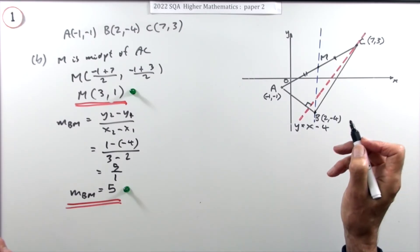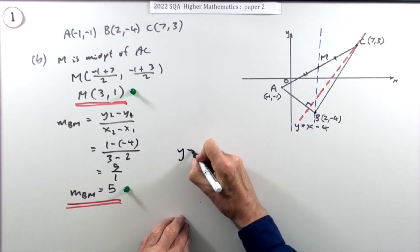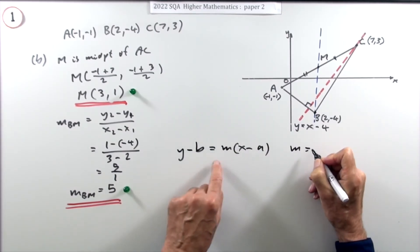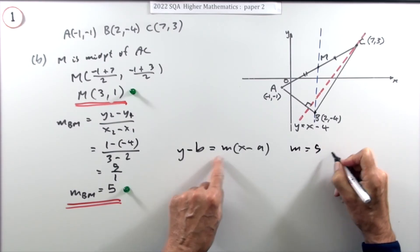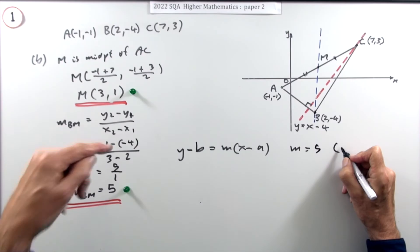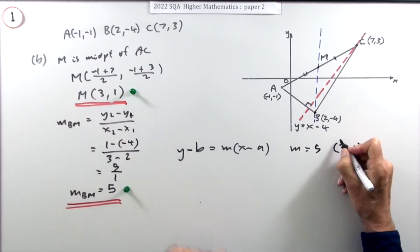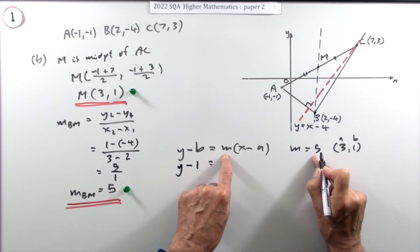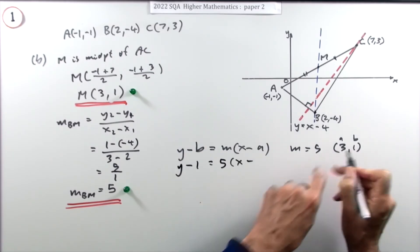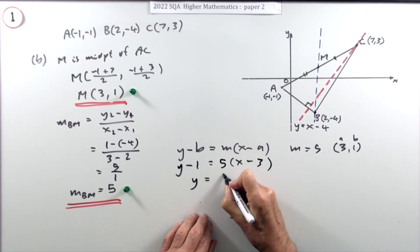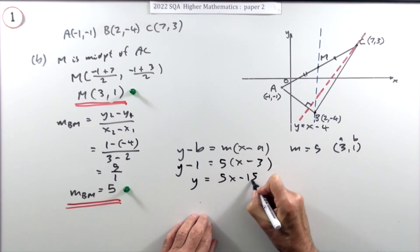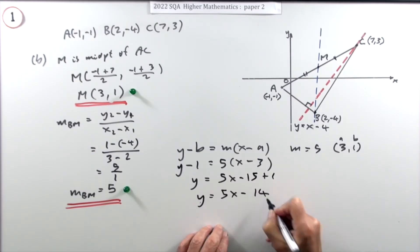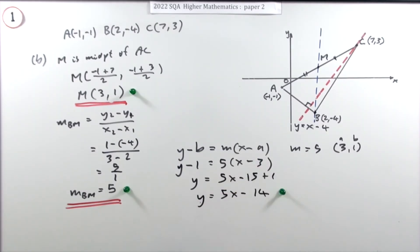Now with everything needed — gradient m = 5 and point M = (3, 1) — use y − b = m(x − a): y − 1 = 5(x − 3), so y = 5x − 15 + 1, giving y = 5x − 14. That's the third mark for part b.